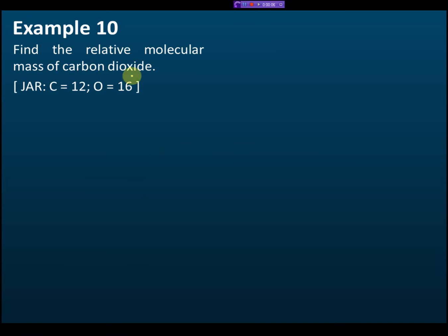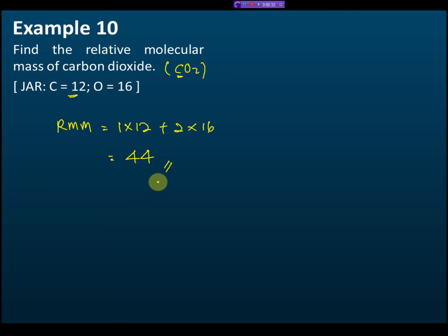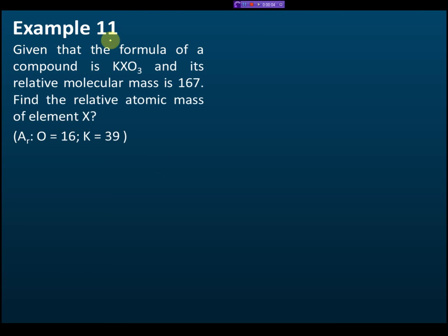Example 10: Find the relative molecular mass of carbon dioxide. The formula is CO2, so the relative molecular mass equals 1 times 12 (for one carbon) plus 2 times 16 (for two oxygens), giving an answer of 44.